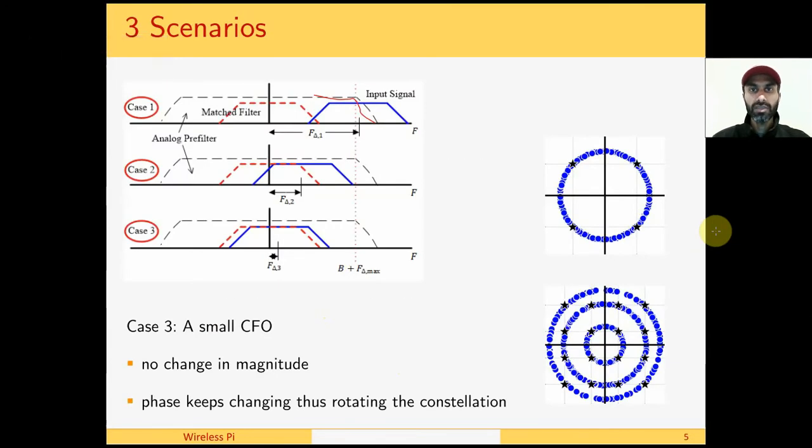There are three scenarios that need to be considered to understand the effect of a CFO. If it is so large that the received signal falls outside the bandwidth of the analog pre-filters in the front end, then this is a case of a bad system design and nothing can be done in this regard.